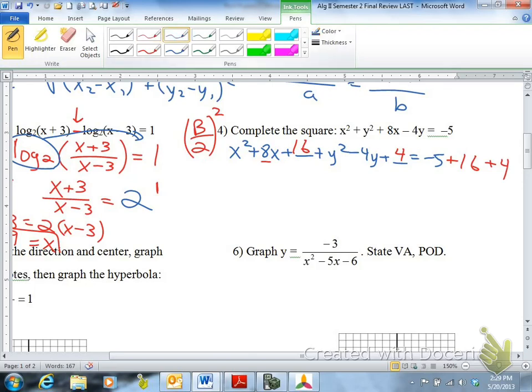So that would give you this setup. And then you would factor. These are perfect square trinomials. So you'd have x plus 4 squared plus y minus 2 squared equals 15. And since this is a circle, you'll probably be asked to write the center of the circle or the radius of the circle or both. So the center is negative 4, positive 2. And the radius is the square root of 15.